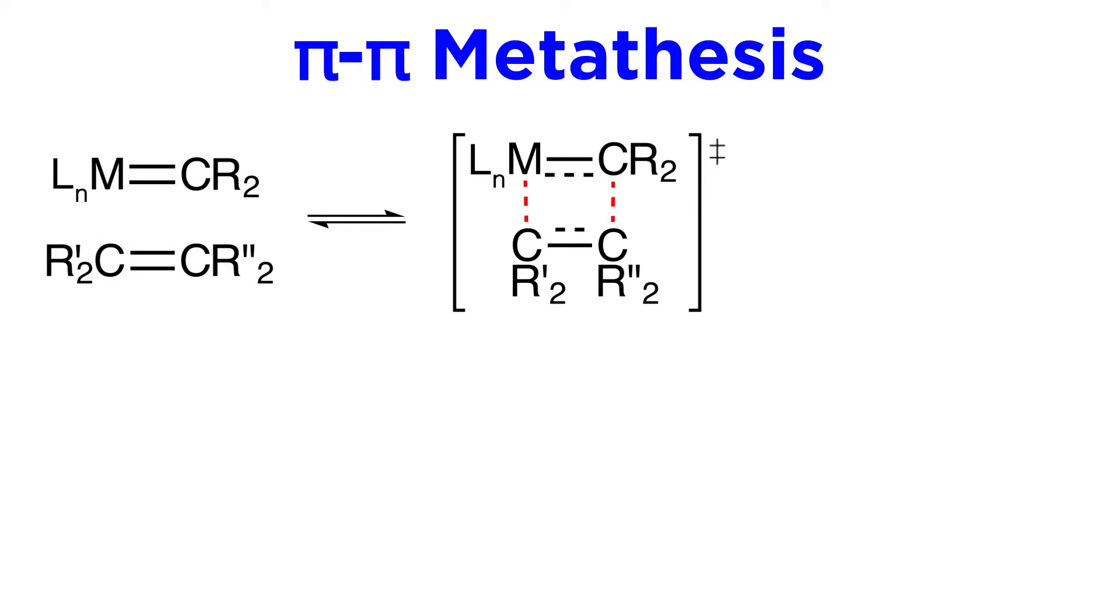Finally, let's go over pi-pi metathesis. This involves two double bonds, so here we have a metal with a double bond to an alkylidene ligand, and then some alkene. Here the two pi bonds will break, and two new sigma bonds will form, passing through this transition state, and then yielding this four-membered ring.